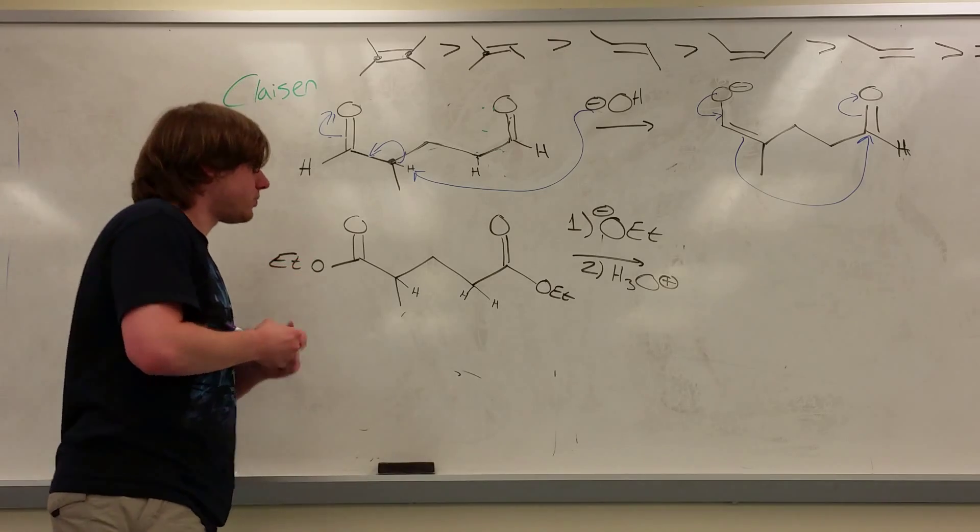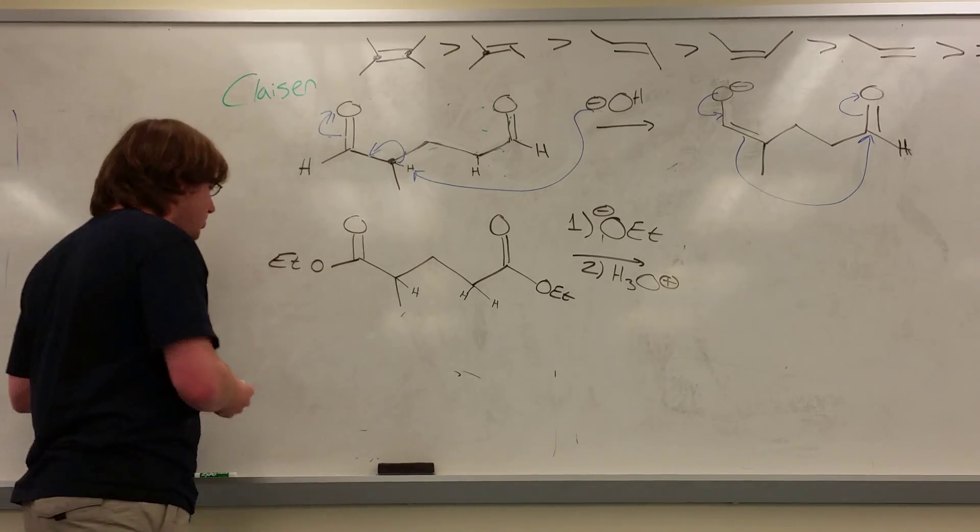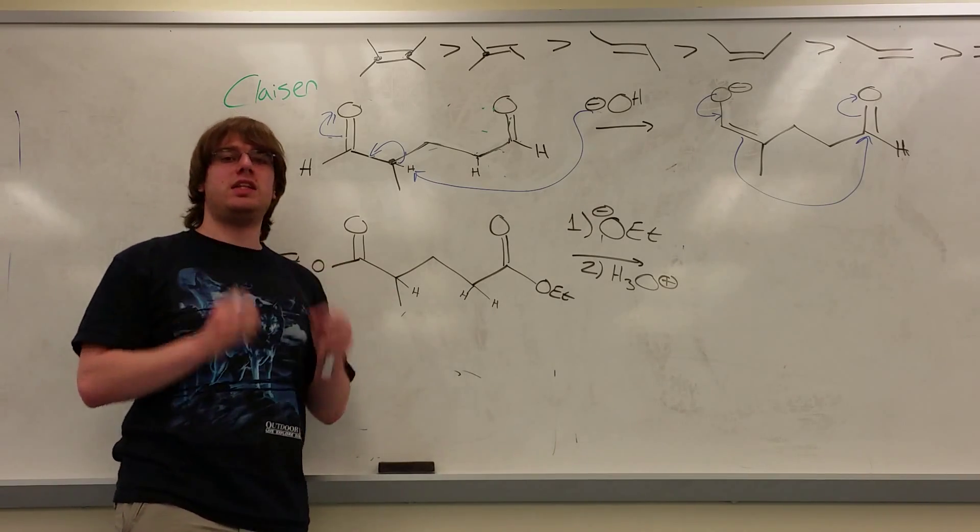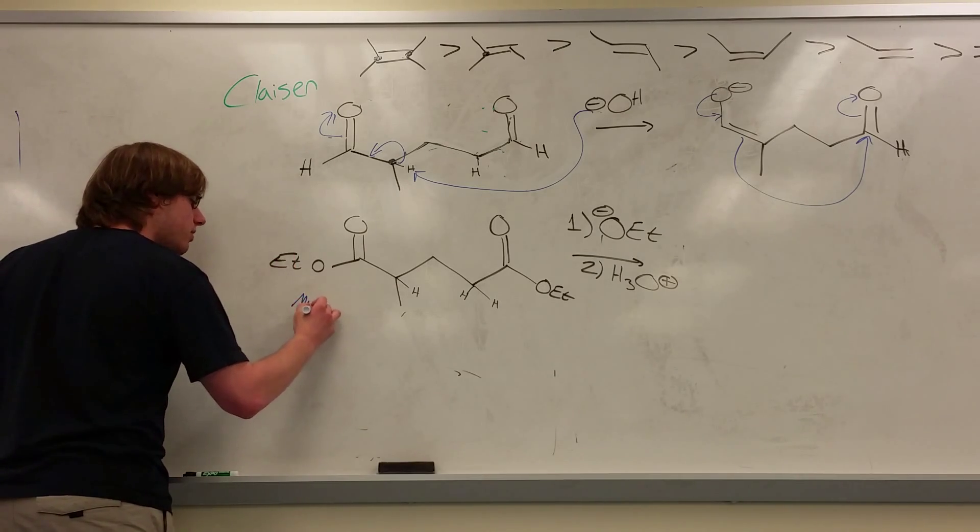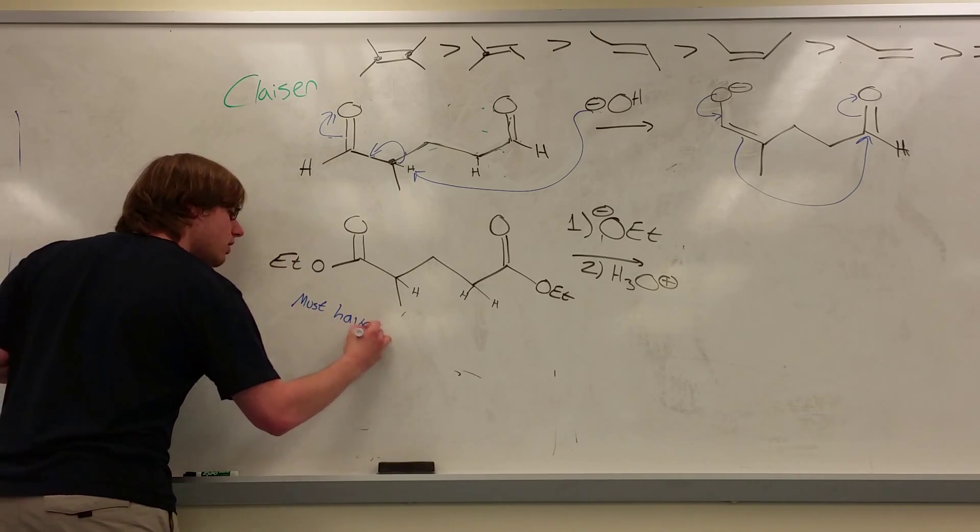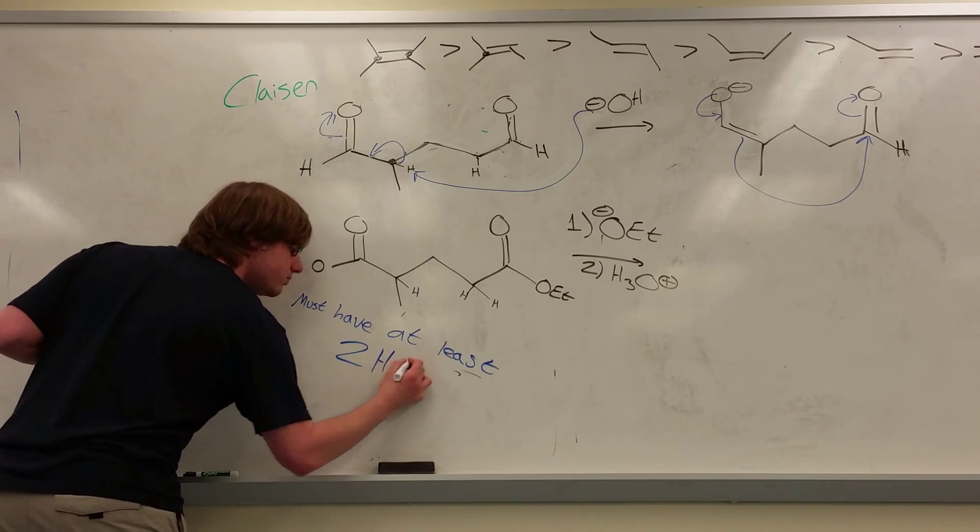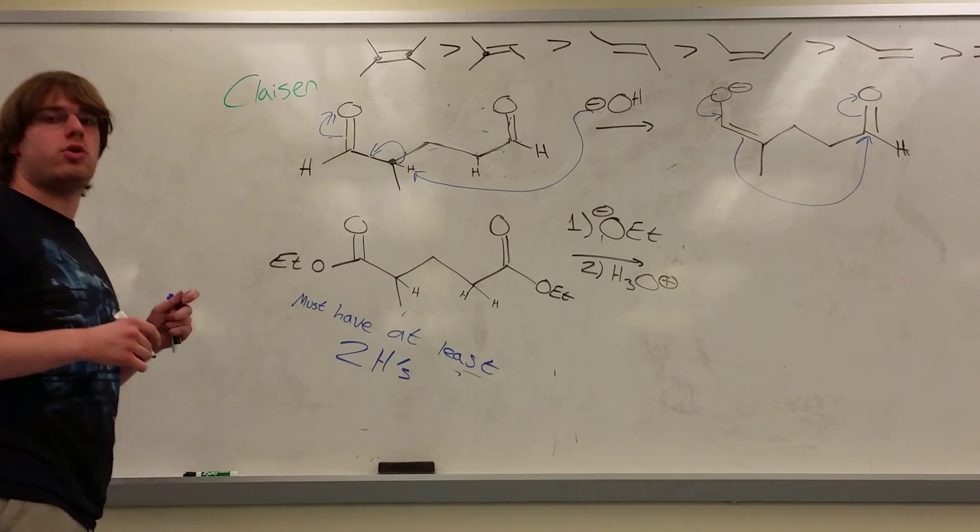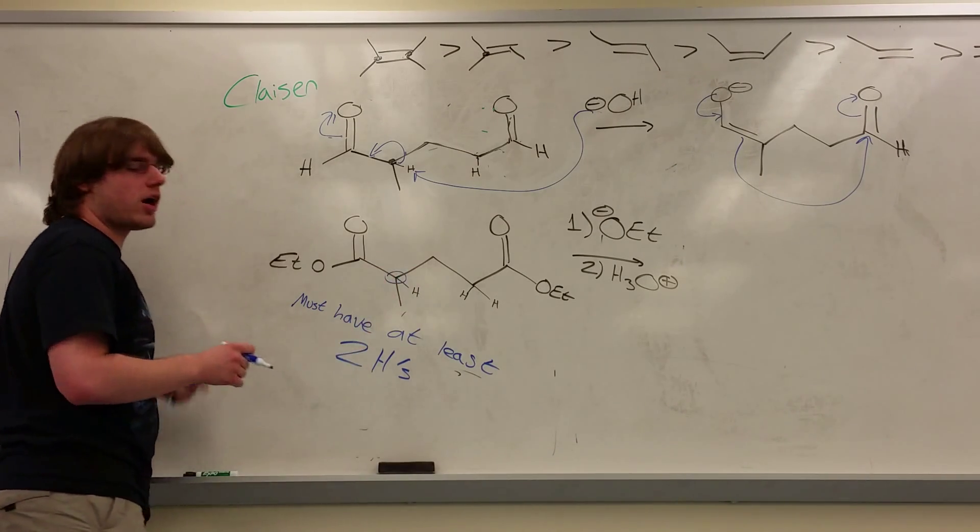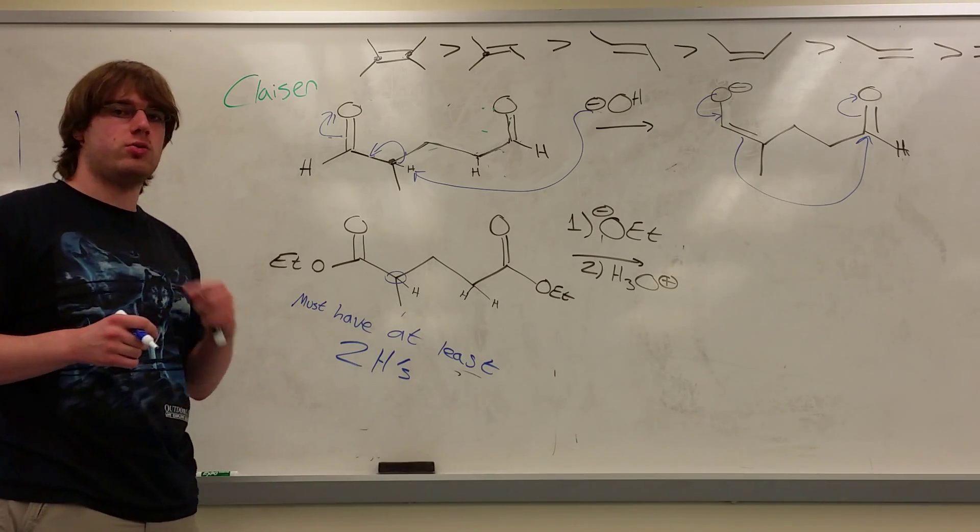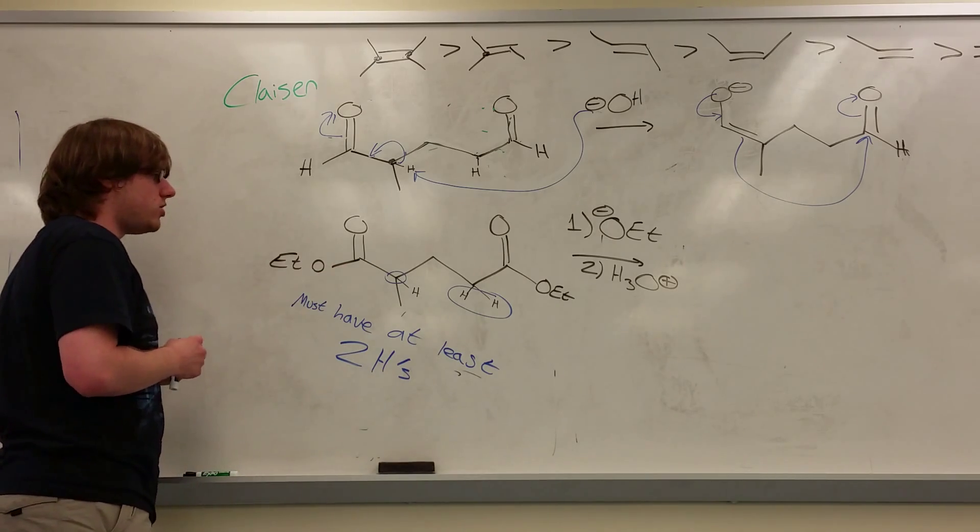Clasins have a different rule. For a Clasin condensation, the carbon that you pull hydrogens off of must have at least two hydrogens on it, and this is specific to Clasins. You must have at least two hydrogens on the carbon with the hydrogens that you pull off from. So on this carbon, this tertiary carbon here, I only have one. I know I can't use that hydrogen. Here I have two, so that is definitely going to be the carbon that I choose to deprotonate.